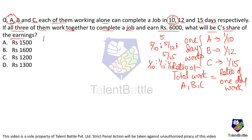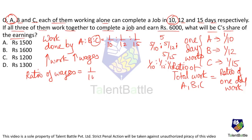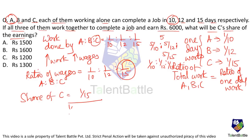Since more work done means more wages, the ratio of wages for A : B : C equals 1/10 : 1/12 : 1/15. C's share corresponds to the fraction 1/15 out of the total. The LCM of 10, 12, and 15 is 60, so the ratio becomes 6 : 5 : 4.